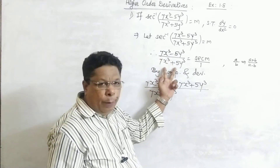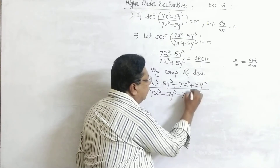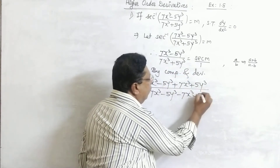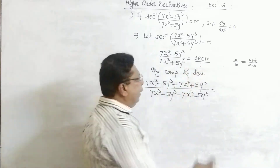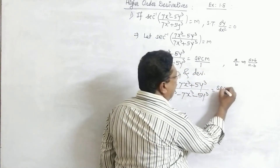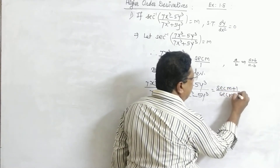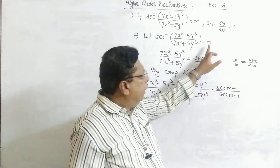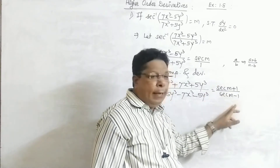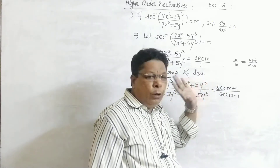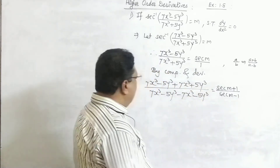On the right hand side, also applying componendo and dividendo gives (sec(n) + 1)/(sec(n) − 1). Since n is constant, sec(n) is also constant, and therefore (sec(n) + 1)/(sec(n) − 1) is also a constant. We denote this constant as c.